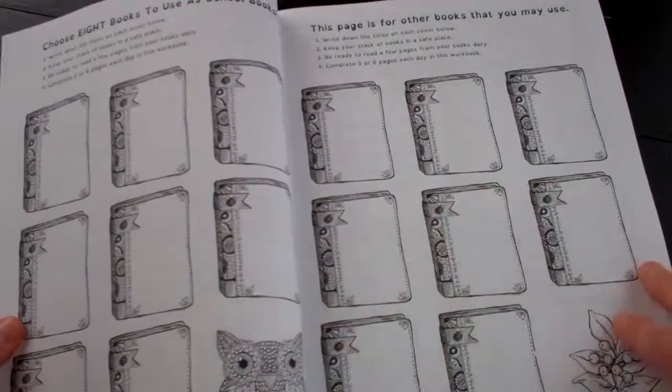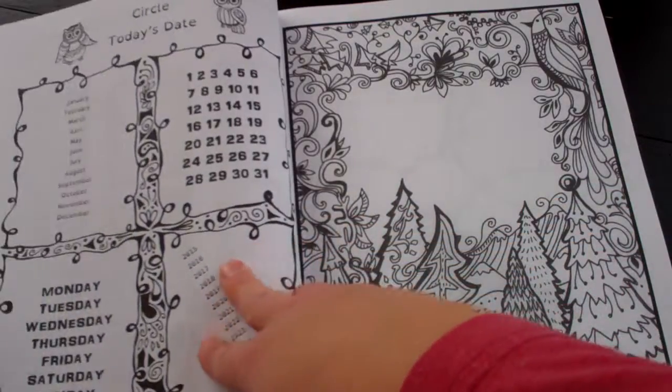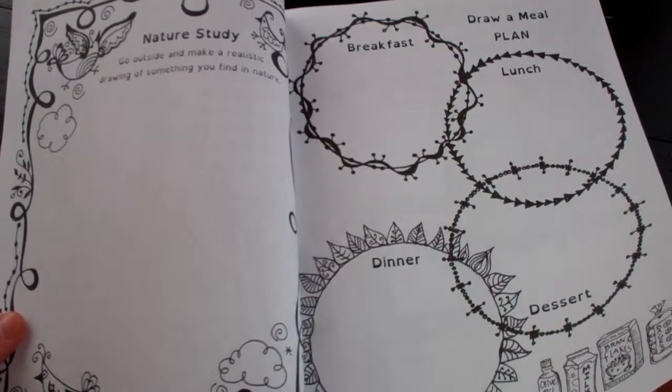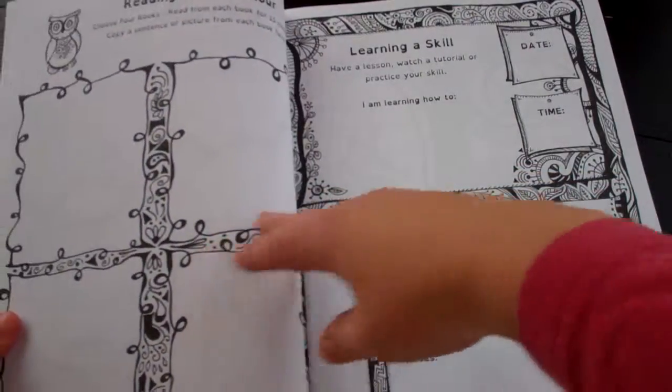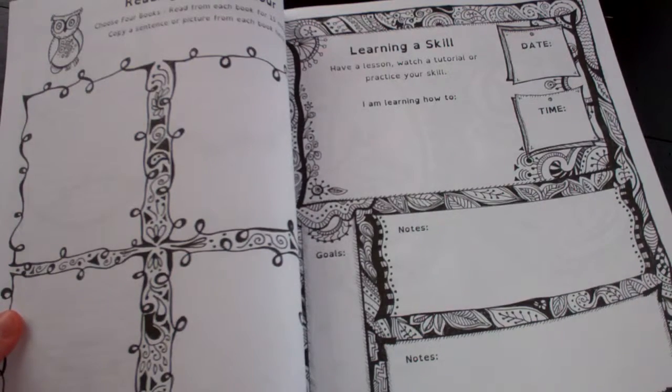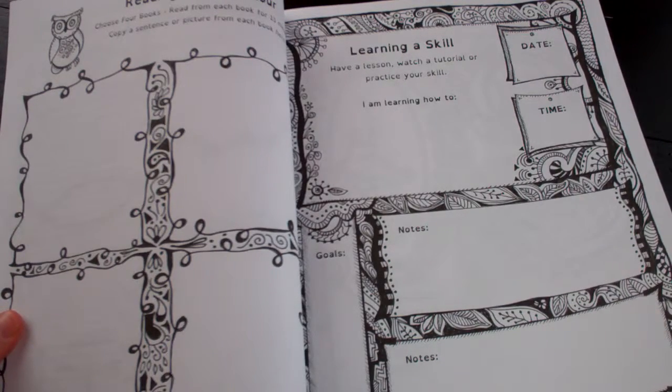And this is geared towards boys. The artwork in it is geared towards boys. There's calendars, meal plans, getting them to think about what they're eating, nature study, some reading time, sketching out and writing out some things they're reading about, learning a new skill.